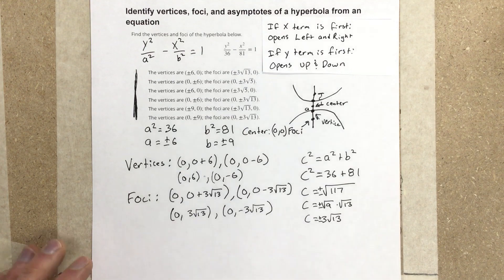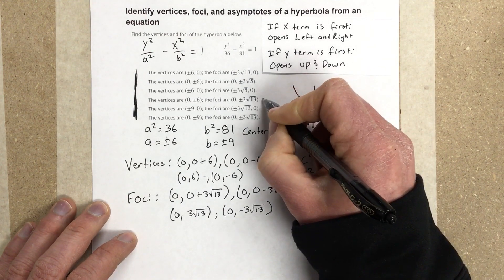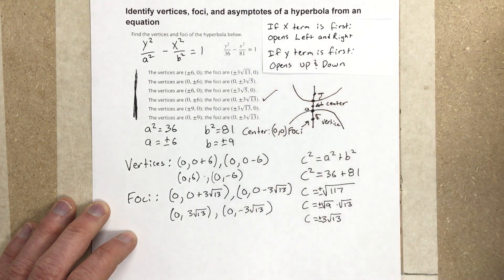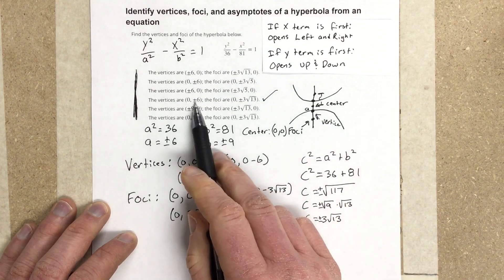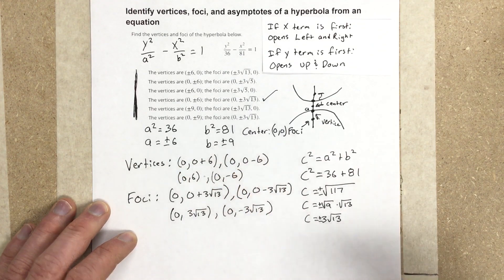So which one of these would be our solution? Our solution would be the fourth one down, this one here. Because you can see it says 0, plus or minus 6, and 0, plus or minus 3 root 13.